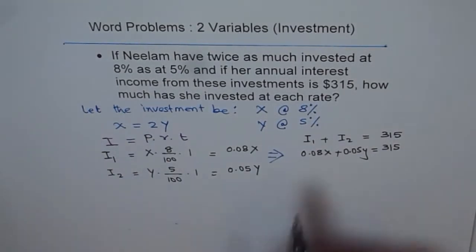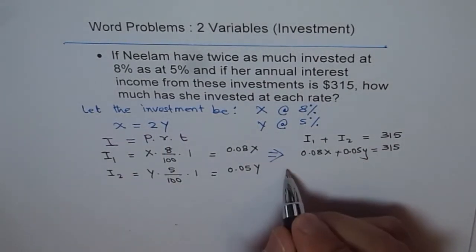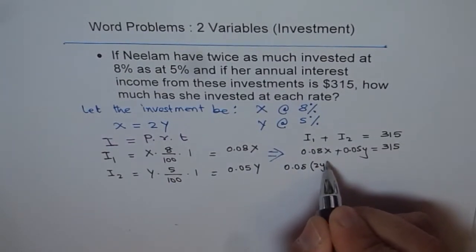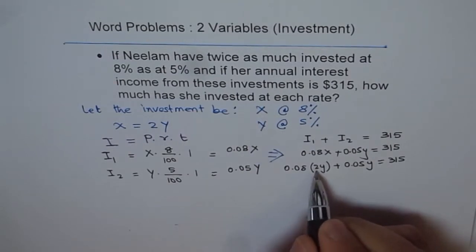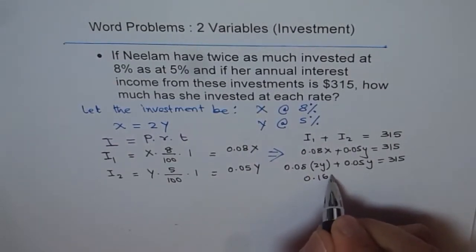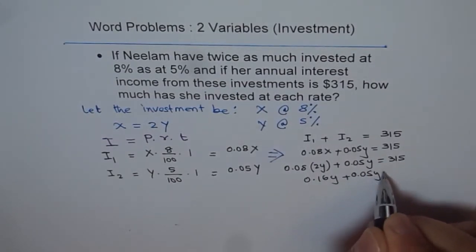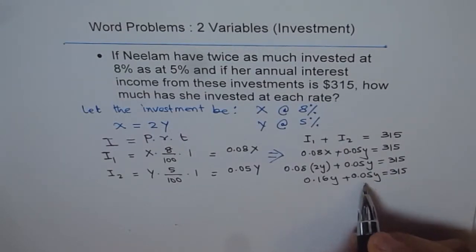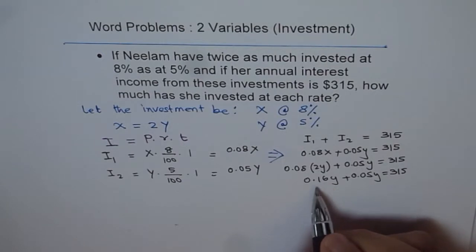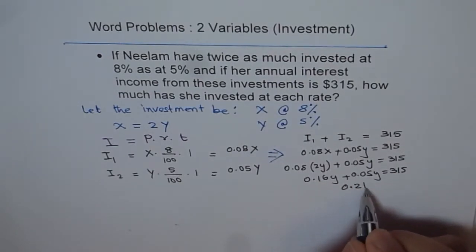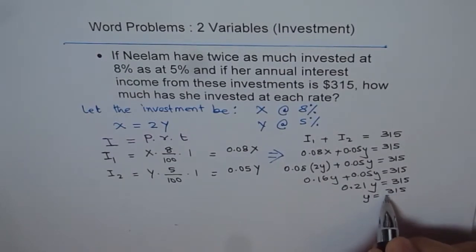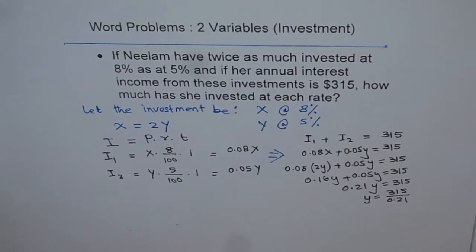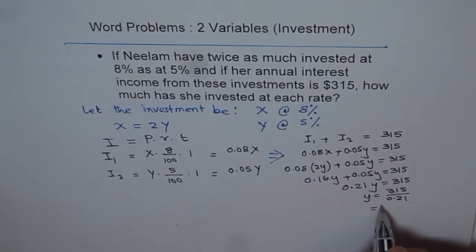You know, X is 2 times Y. So we can replace this X with 2Y and solve for Y. Let's do that. We get 0.08 times 2Y plus 0.05 of Y equals to 315. This is 2 times 8 is 16. So we get 0.16Y plus 0.05Y equals to 315. If you add these two, you get 5 plus 6 is 11 and then 1 plus 1 is 2. You get 0.21Y equals to 315 and from here you can calculate Y equals to 315 divided by 0.21. It is 315 divided by 0.21 which gives us 1500.